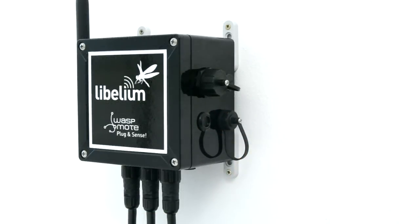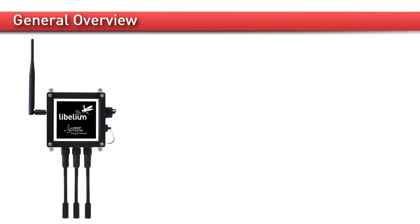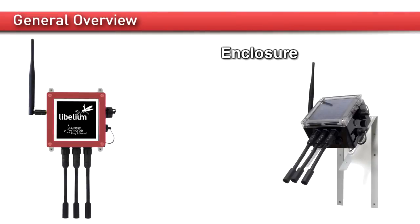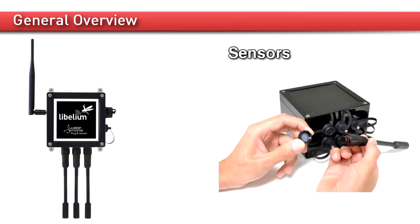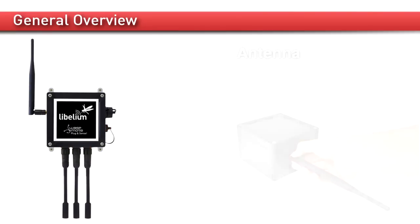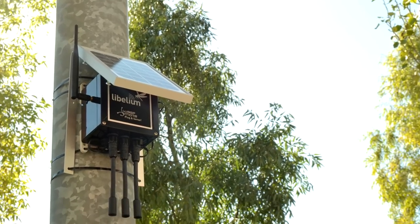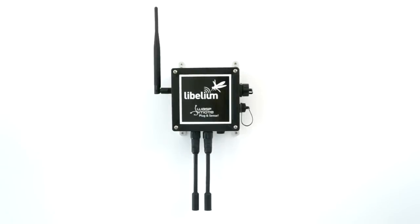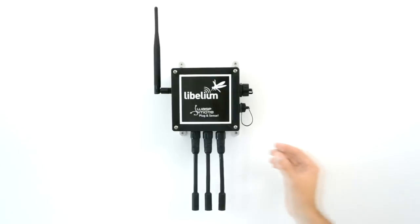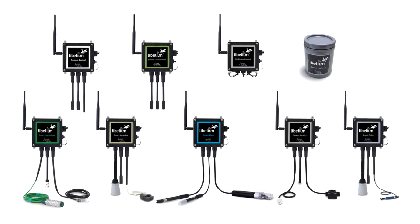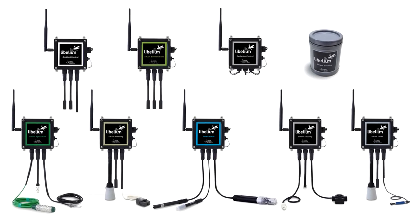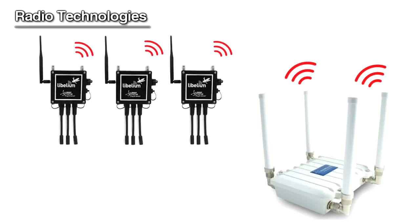From Libelium we provide an encapsulated line called Plug and Sense. This line consists of a robust waterproof enclosure with specific external sockets to connect the sensors, the solar panel, the antenna, and even the USB cable in order to reprogram the node. It has been specially designed to be scalable, easy to deploy and maintain. Sensor boards can easily be attached by just screwing them to the bottom sockets. This allows you to add new capabilities to existing networks in just some minutes. There are 9 different encapsulated boxes which permit to combine several sensors. Thus, the Plug and Sense boxes and Meshlium integrate the wireless sensor network.